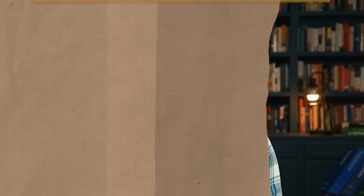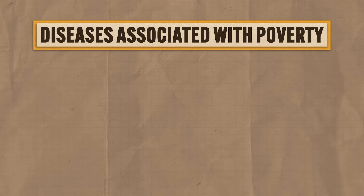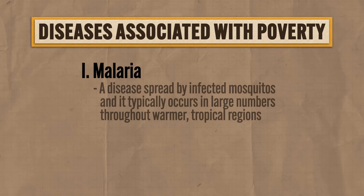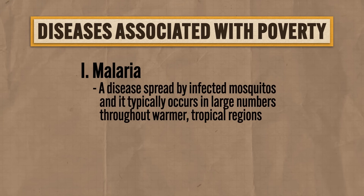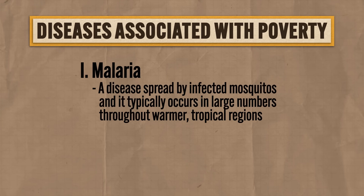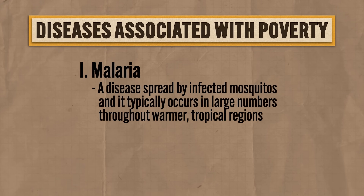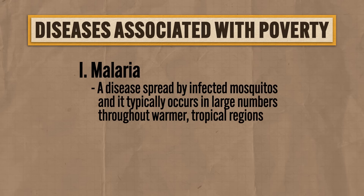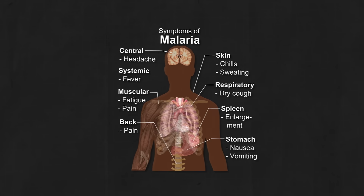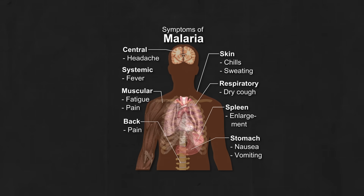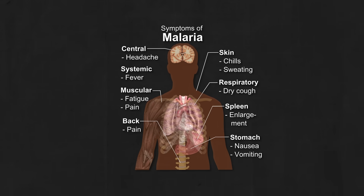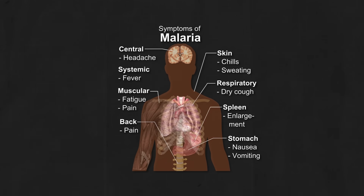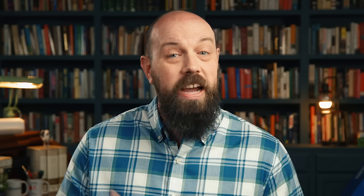I'm going to give you two examples. The first disease associated with poverty is malaria, which is a disease spread by infected mosquitoes and it typically occurs in large numbers throughout warmer tropical regions. Malaria is not fun — people infected with it experience flu-like symptoms, but in some cases complications often result in death.